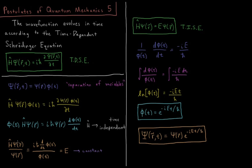We'll now divide both sides by psi of R and phi of t, so we get H psi over psi equals I h-bar d phi dt over phi of t. So what we have here is a function of space, which can vary in x or y or z, and a function of time, which can vary all throughout time. And these two have to be equal to each other for all values of space and all values of time. So this suggests that they both must be equal to a constant, and we'll call this constant E.